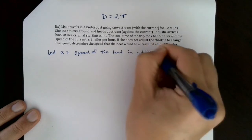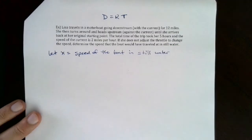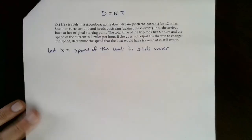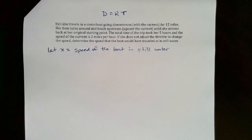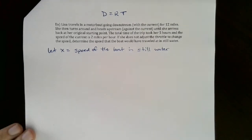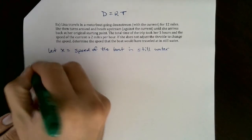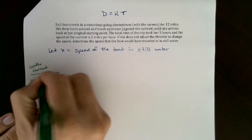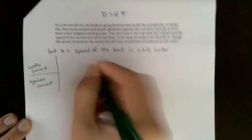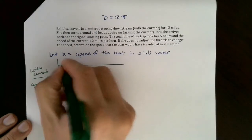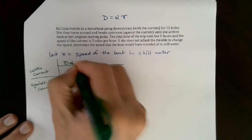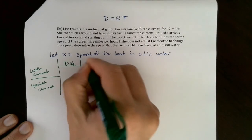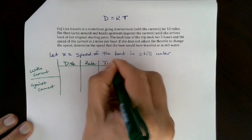When you see a problem like this, you're using distance equals rate times time. Write a let statement: we're going to let x equal the speed of the boat in still water. Still water doesn't move - it's asking how fast the boat goes if there were no current. We'll set up a chart for going with the current and going against the current, using the formula distance equals rate times time.